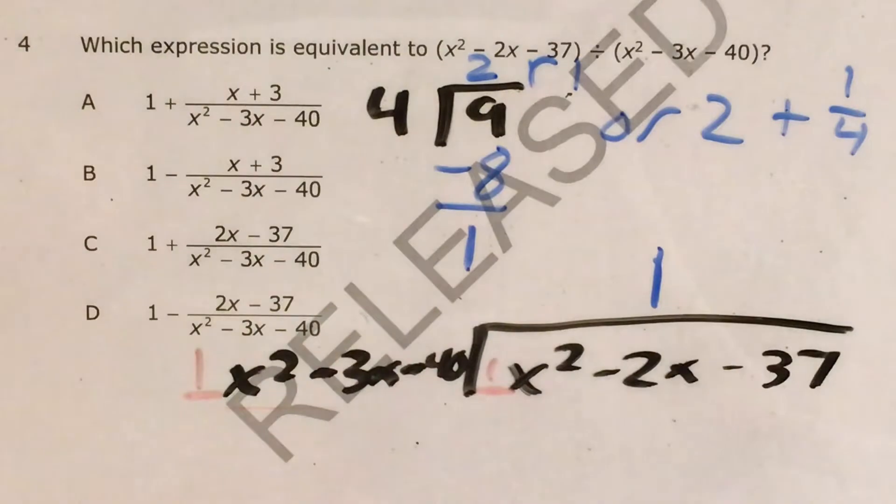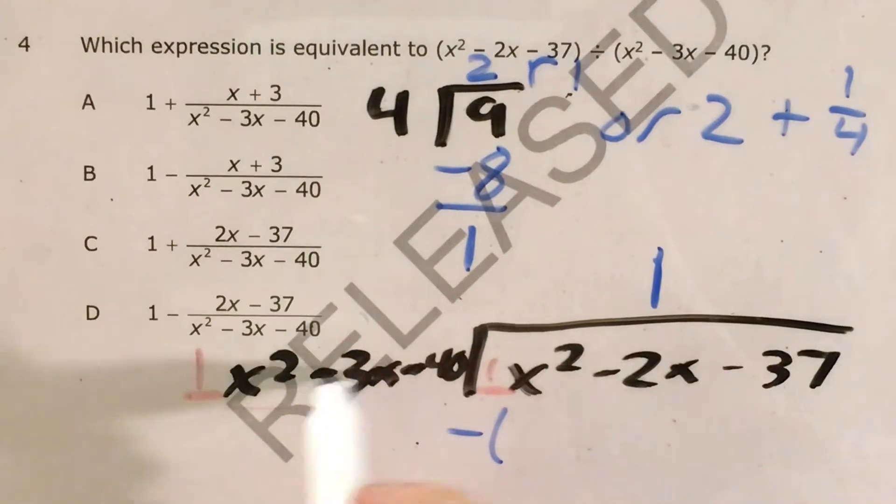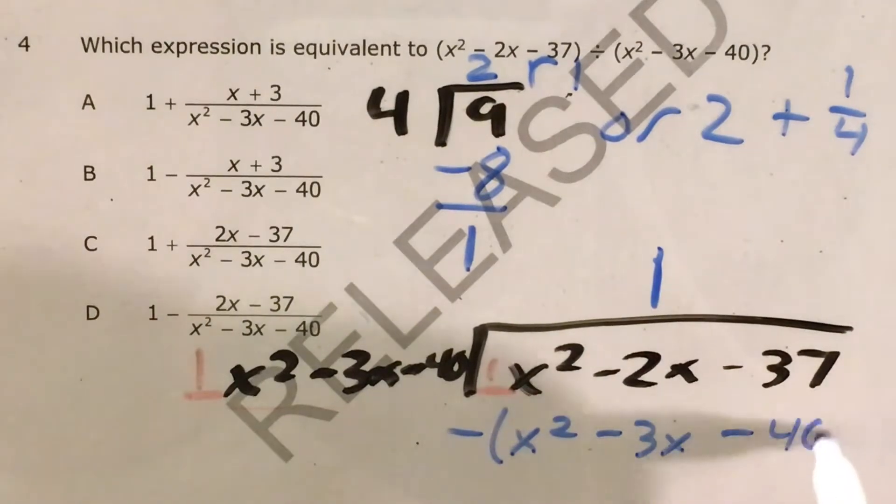Unfortunately, all our answers have one already, so that doesn't really help us. So let's go ahead and subtract that one time that this polynomial can go into this one. So we're subtracting x squared minus three x minus 40.